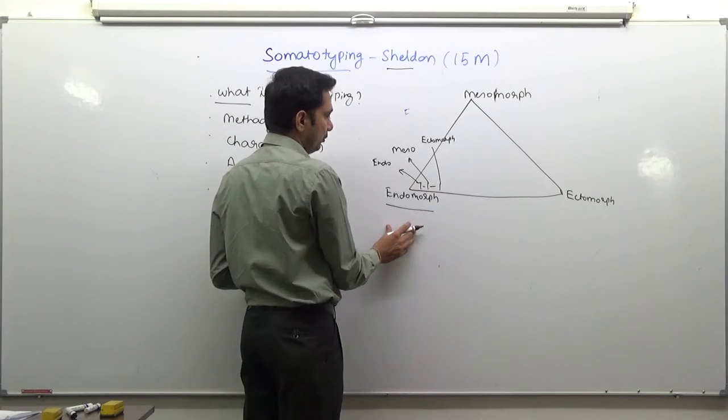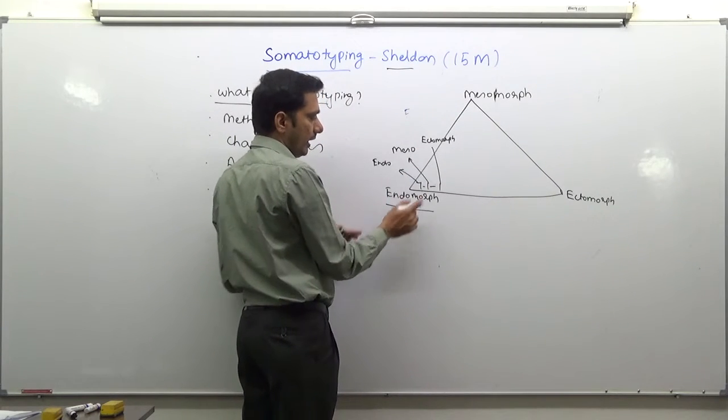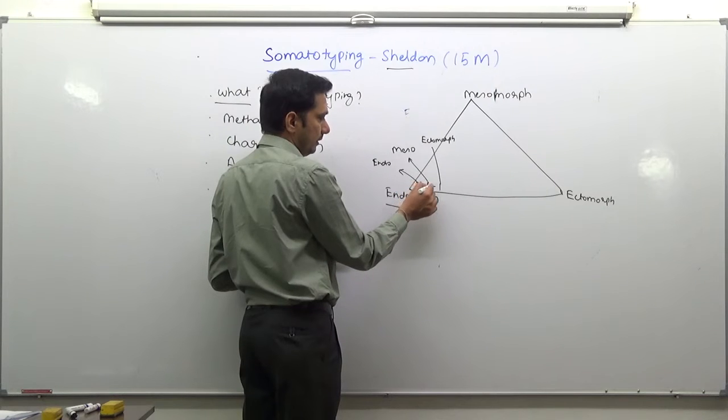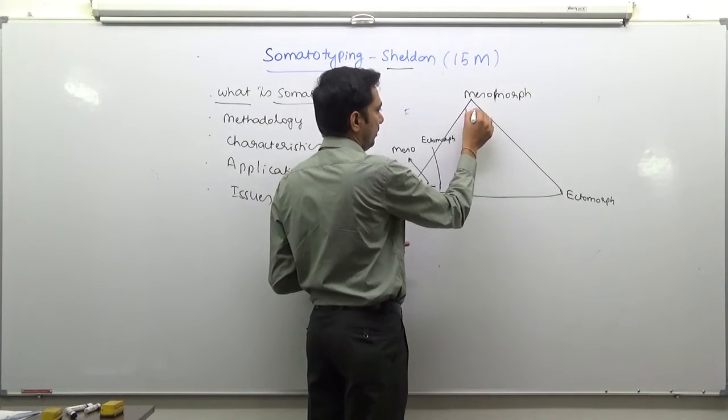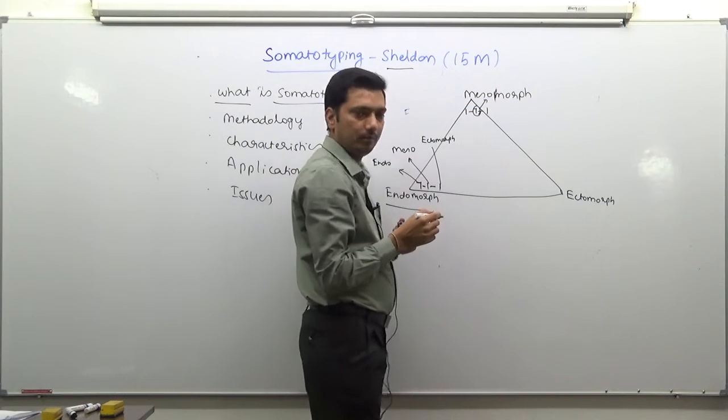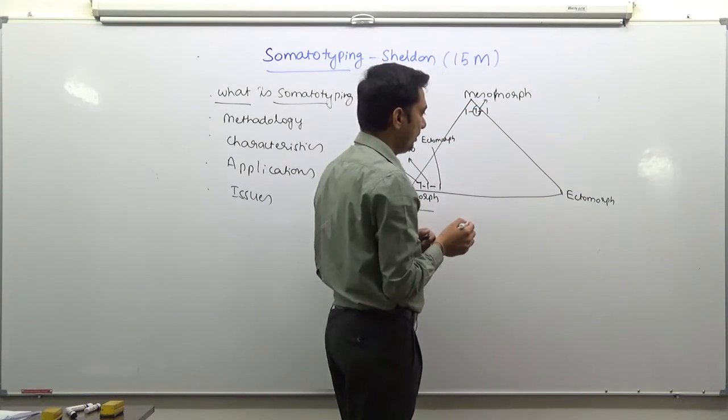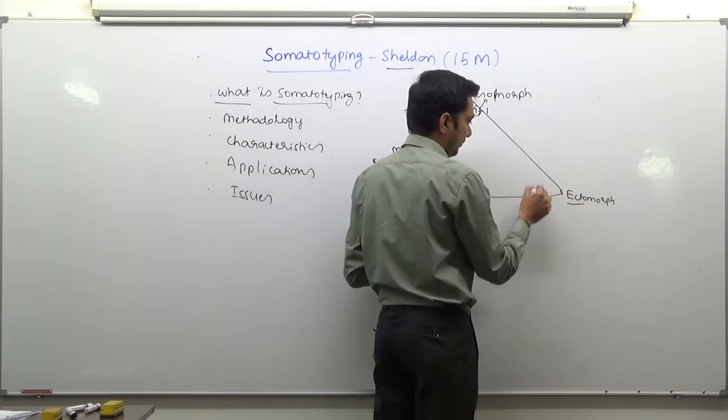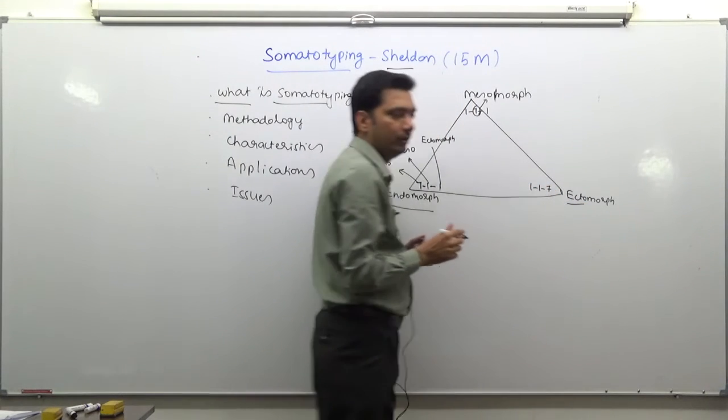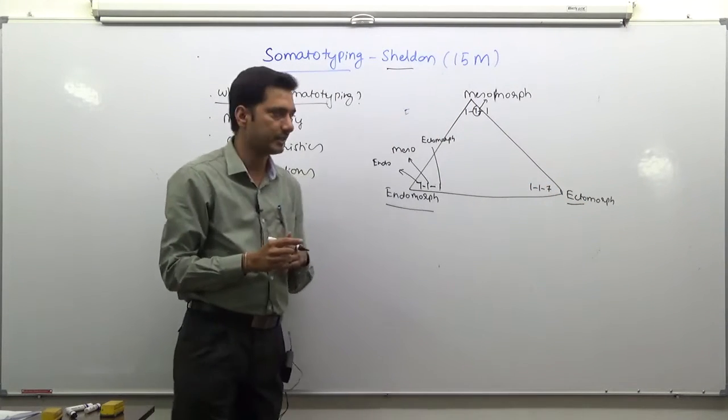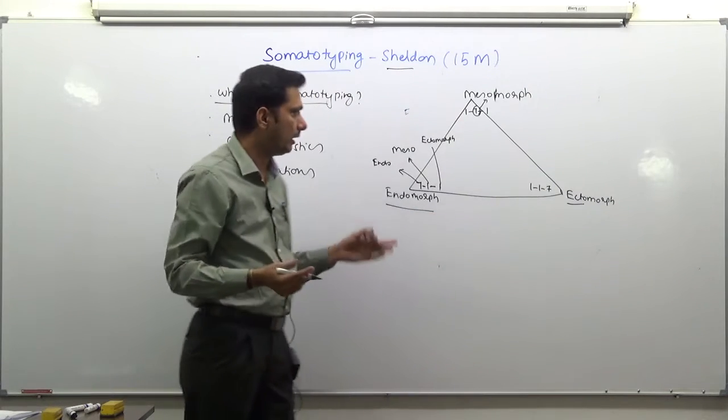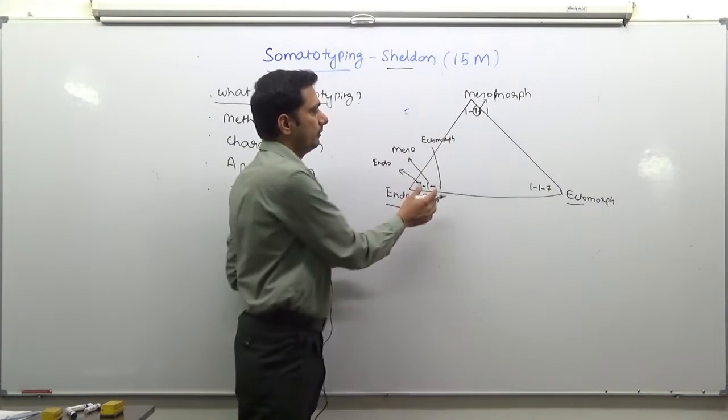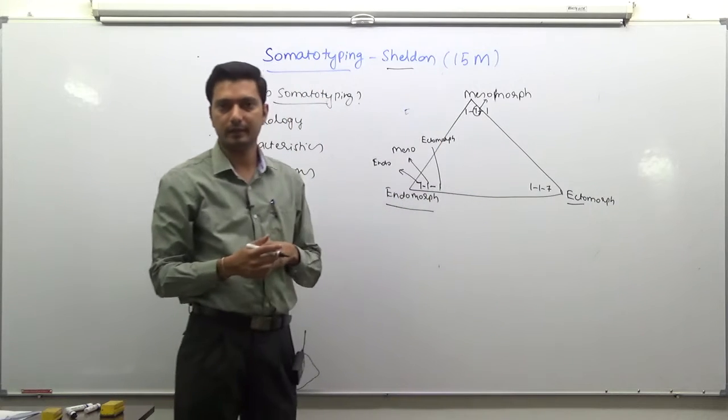Extreme endomorphs have numbering 7-1-1, mesomorphs have 1-7-1, and extreme ectomorphs have 1-1-7. But people can fall anywhere within this triangle.